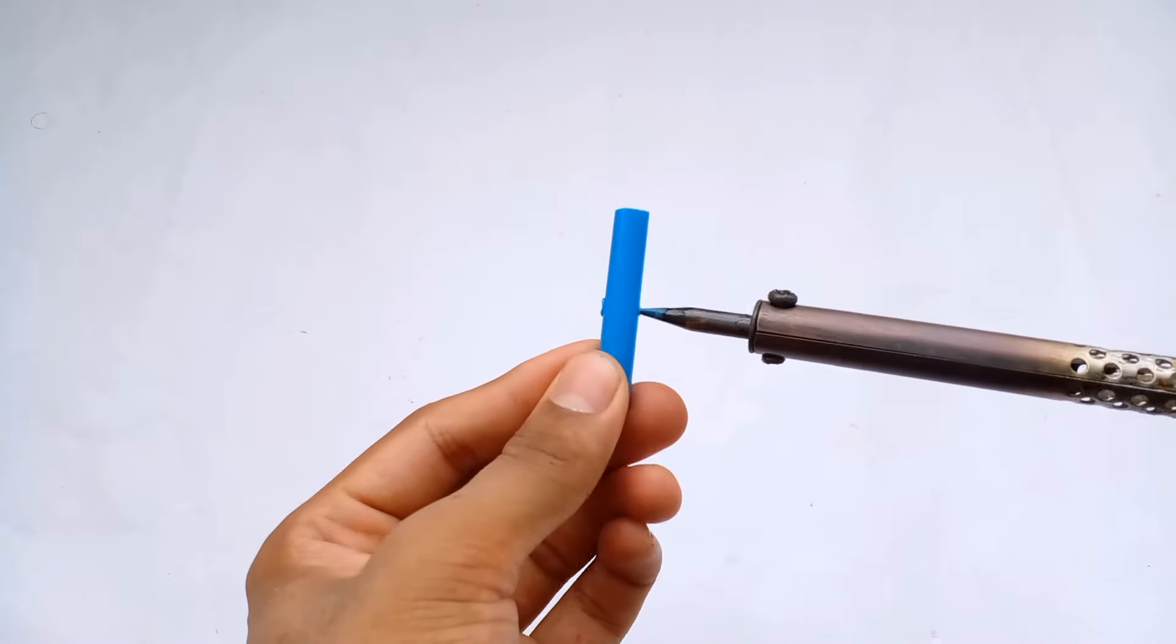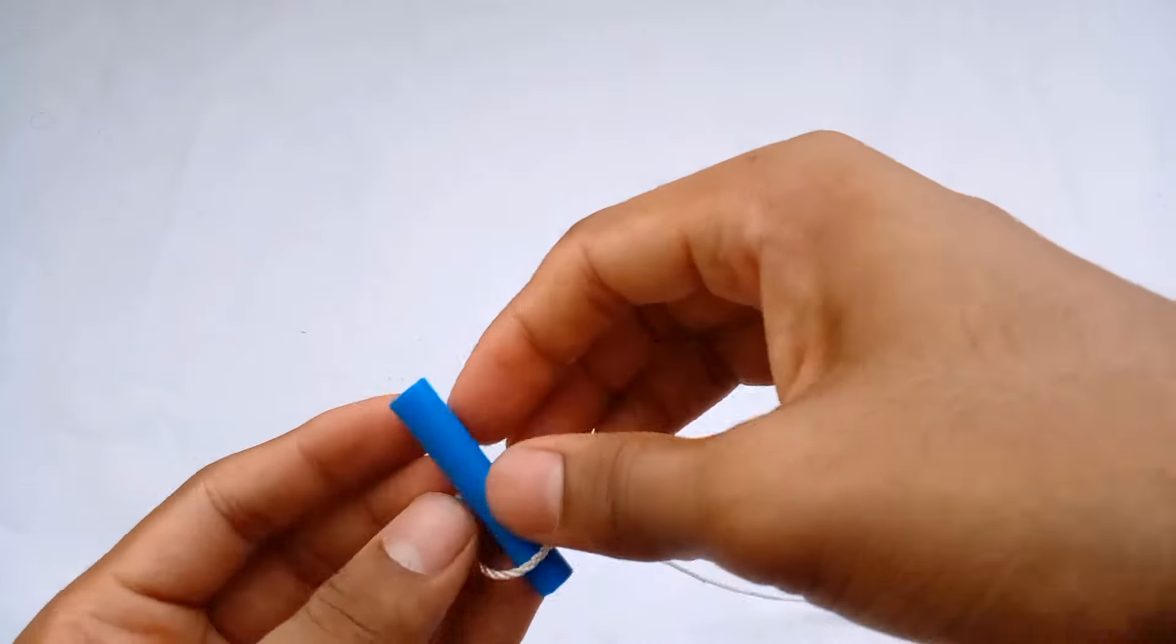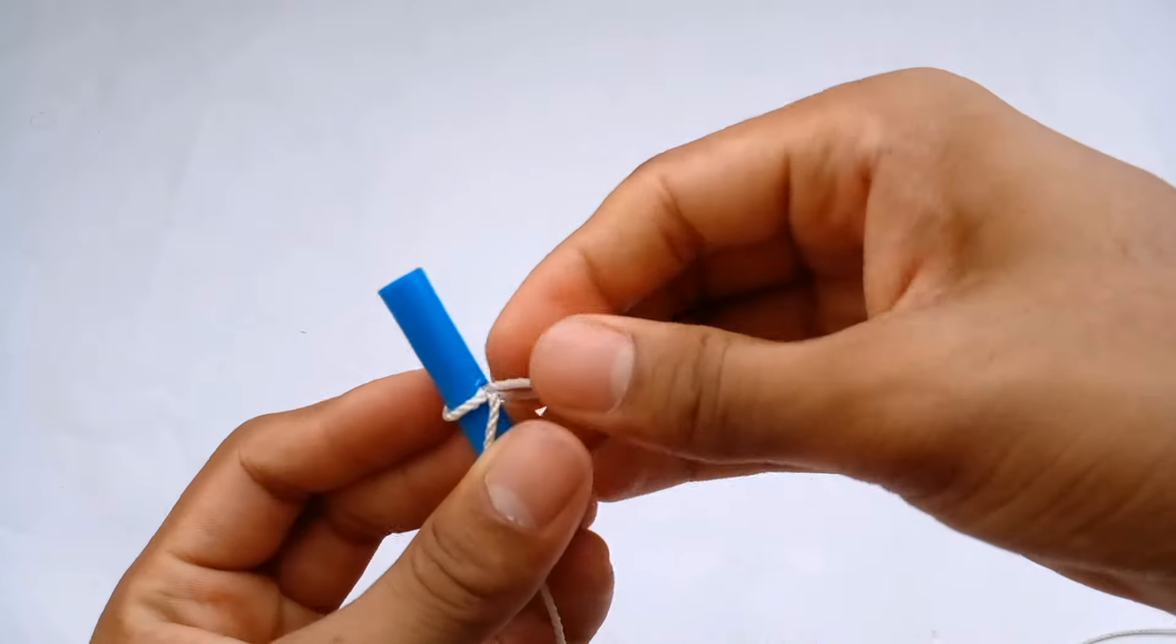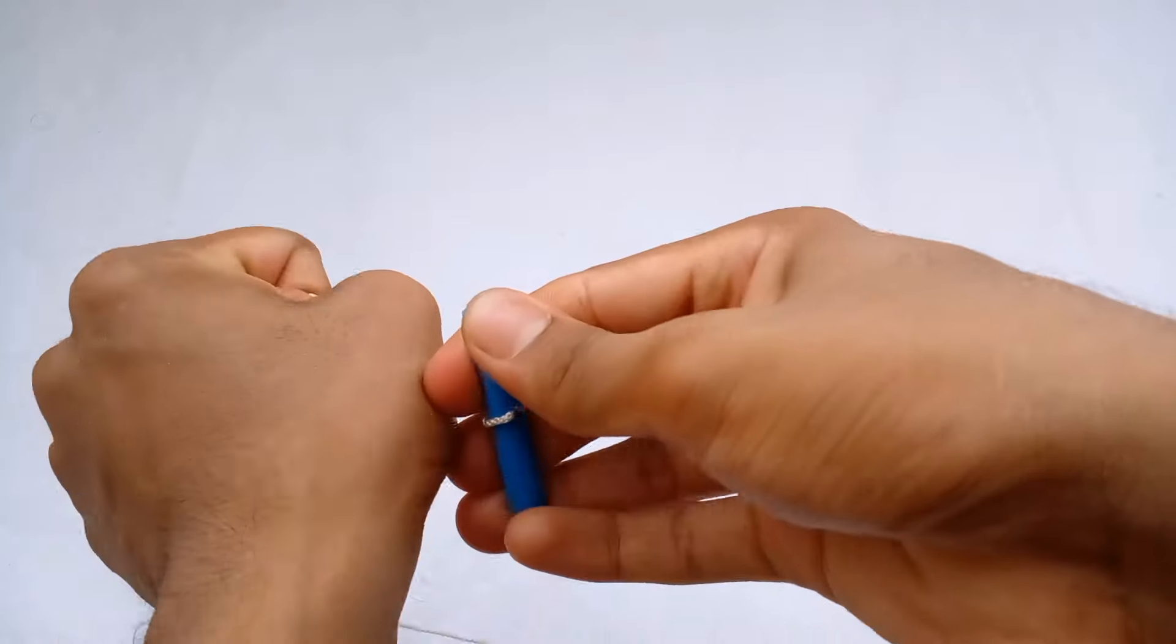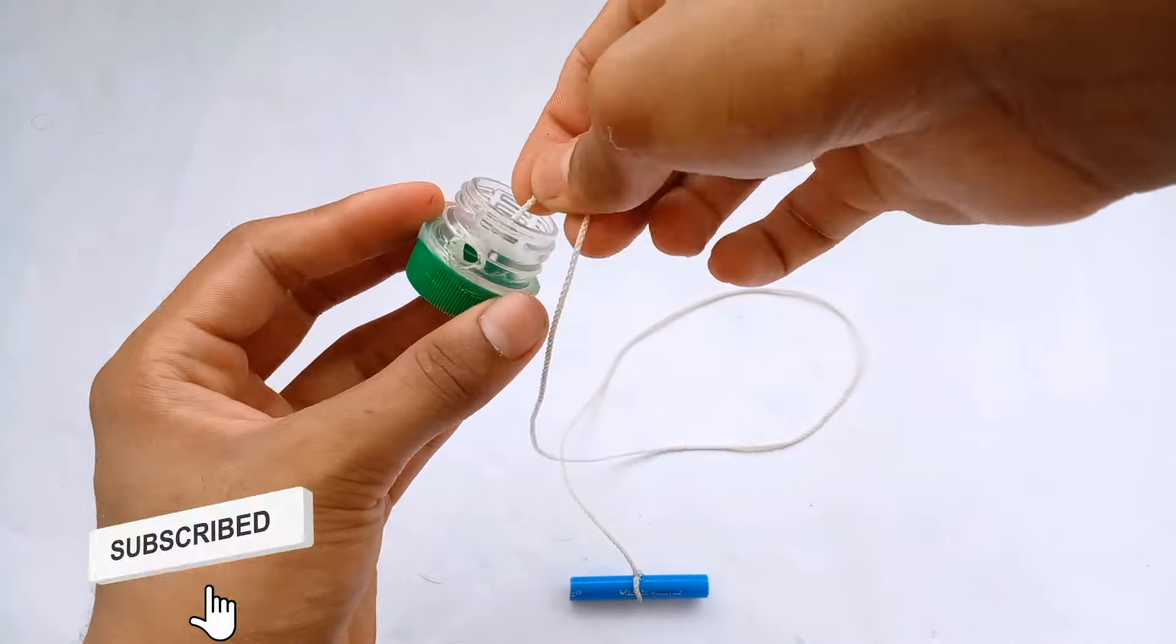Now take a pen case or body and make two holes on both sides as shown in the video. Take a strong string or thread, tie it with the pen case, and place it properly into the bottle cap part by following Sinon's steps.